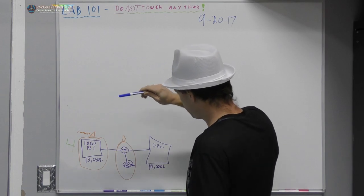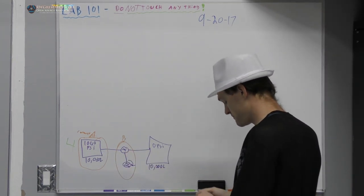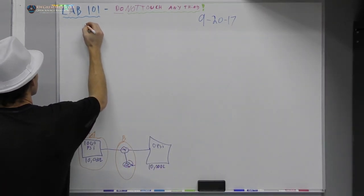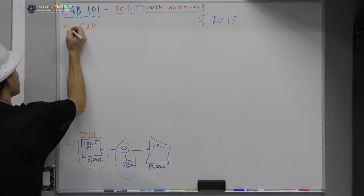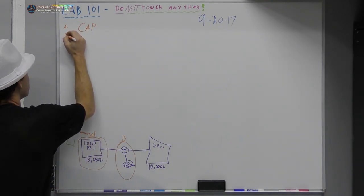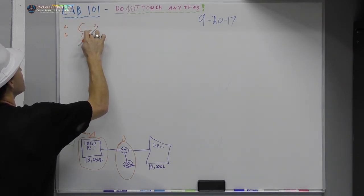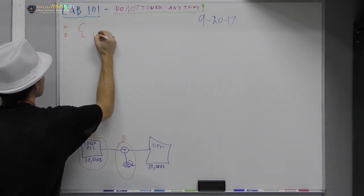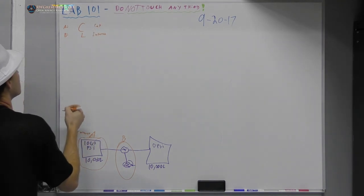So, here we are. We have component A and we have component B. Alright. Component A, in my viewpoint, is a capacitor. And component B... Alright. I'm going to put L and C. Inductor.